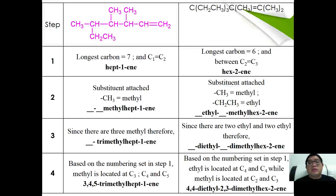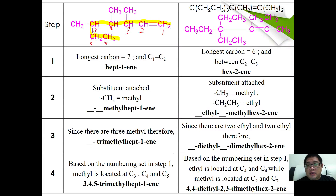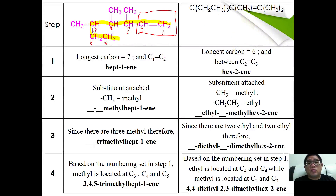For example, given this molecule, we first find the longest carbon chain. The longest chain is C1, C2, C3, C4, C5, C6, C7 — it does not have to be a straight chain. So based on the numbering, this is carbon number one through seven. The C=C is located between C1 and C2.